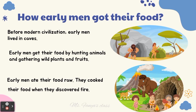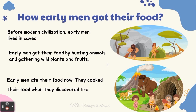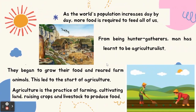How did early men get their food before modern civilization? Early men lived in caves and got their food by hunting animals and gathering wild plants and fruits. Early men ate their food raw, and they cooked their food when they discovered fire.